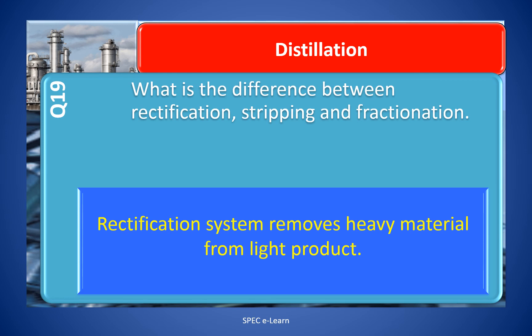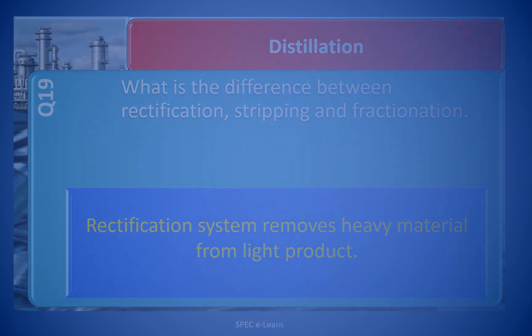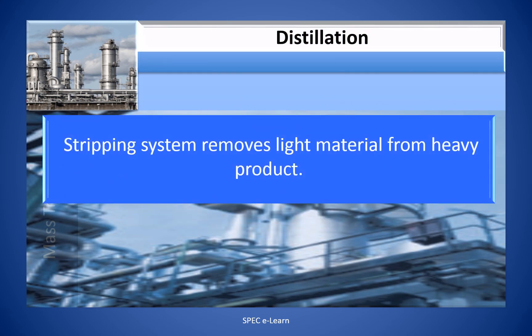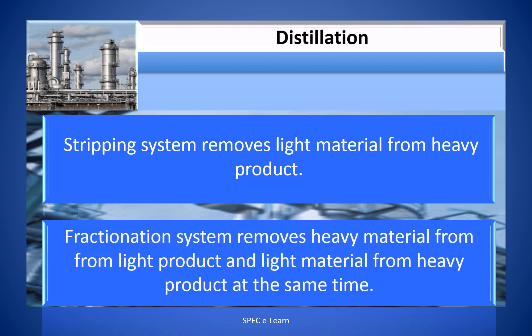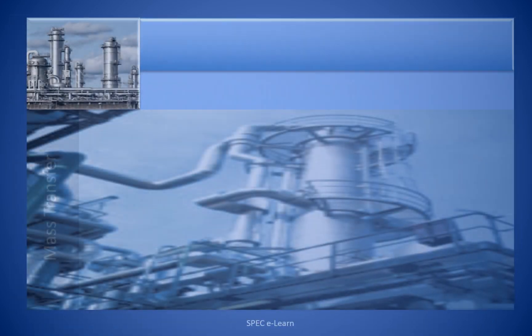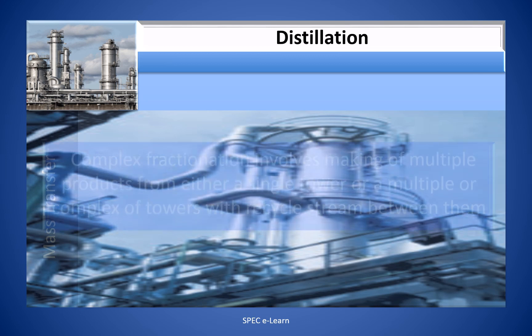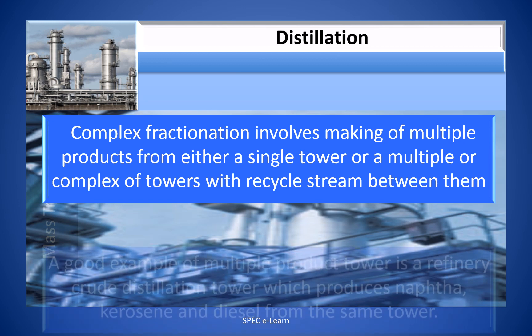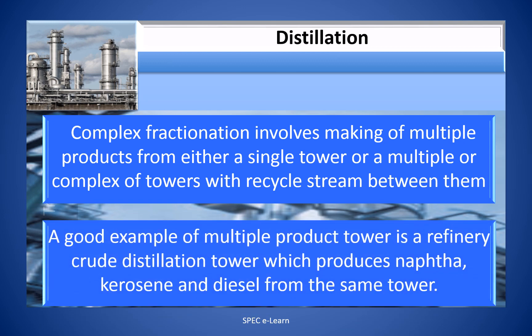Rectification system removes heavy material from light product. Stripping system removes light material from heavy product. Fractionation system removes heavy material from light product and light material from heavy product at the same time. A complex fractionation involves making multiple products from either a single tower or multiple towers with a recycle stream between them.